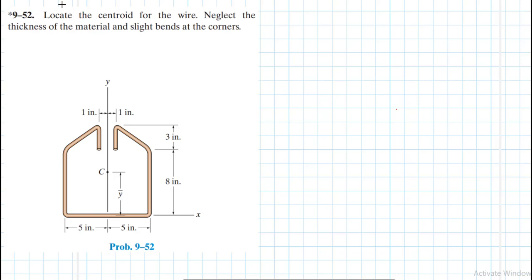Hello, I welcome you all. The problem reads: locate the centroid for the wire and neglect the thickness of the material and slight bends at the corners. This problem is coming from the Engineering Mechanics Statics textbook 13th edition by R.C. Hibbeler.